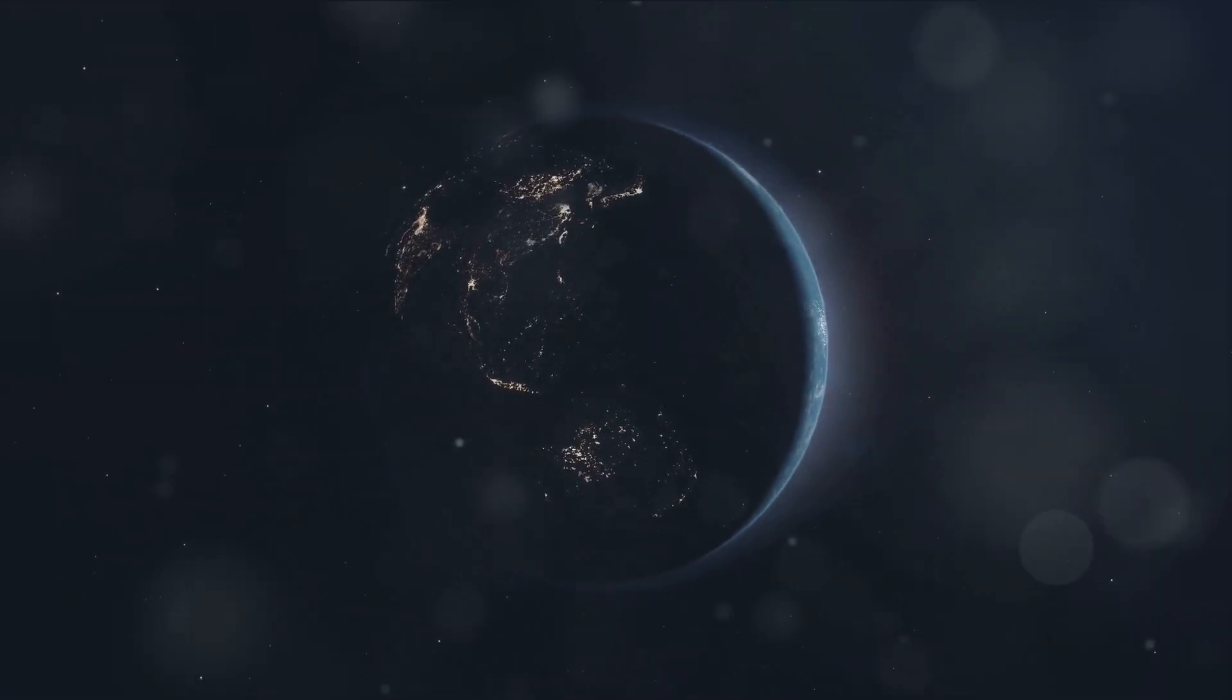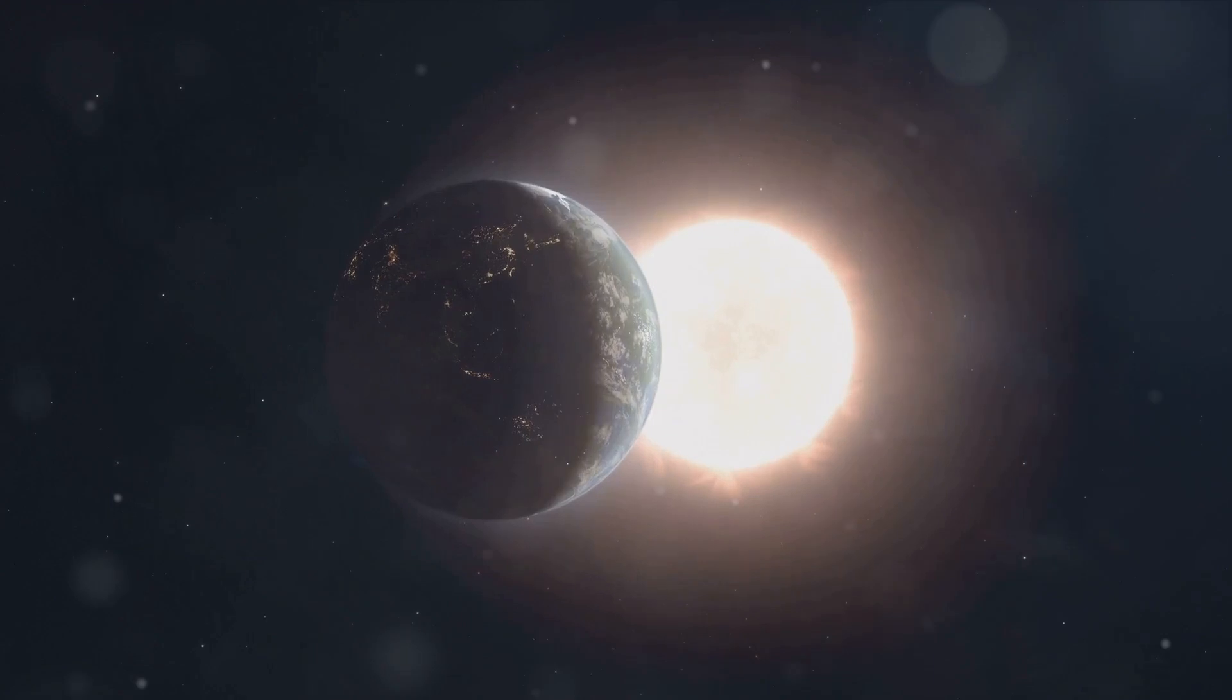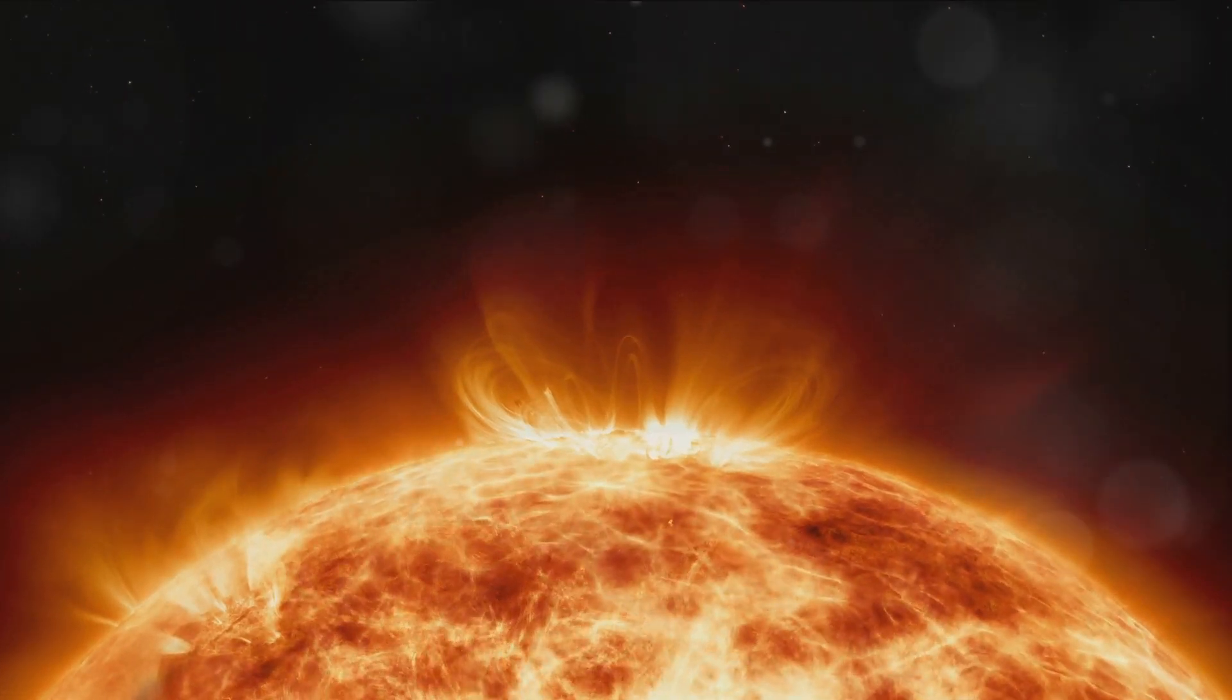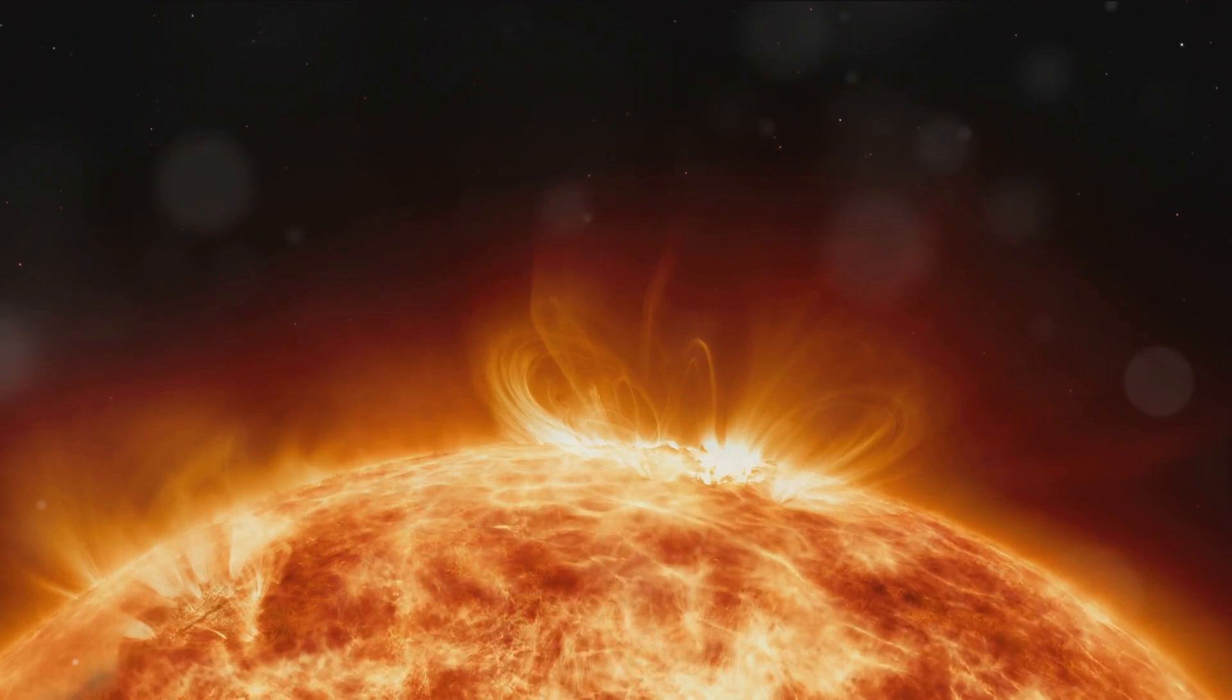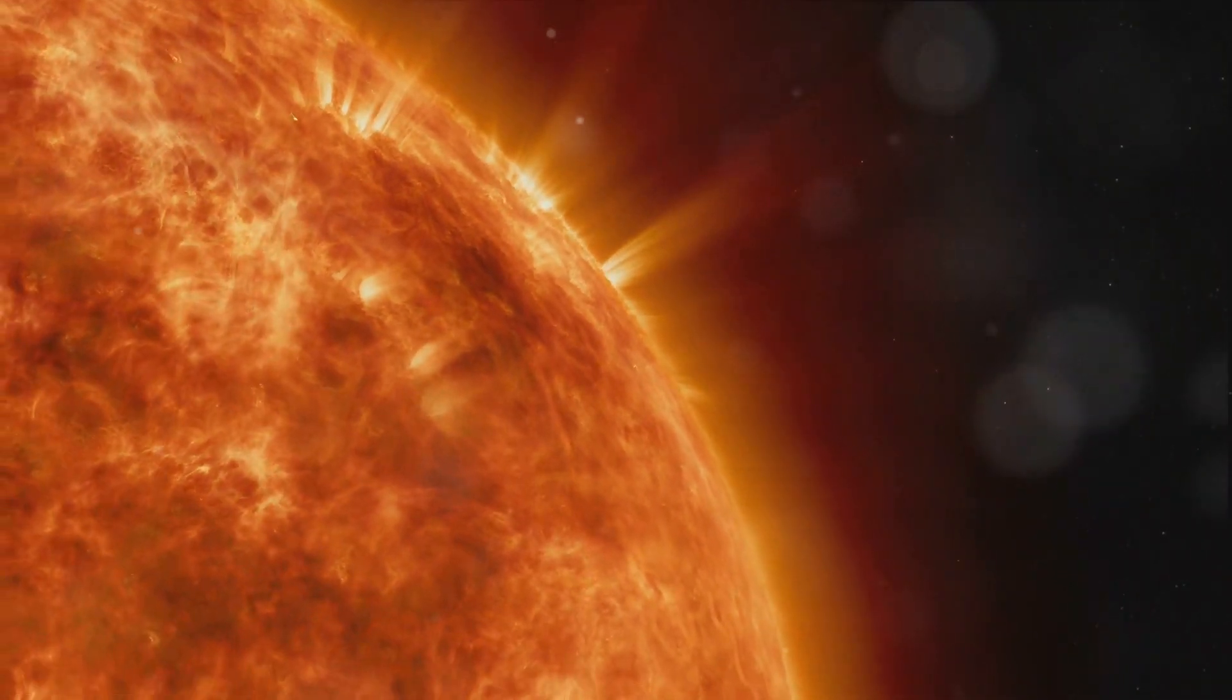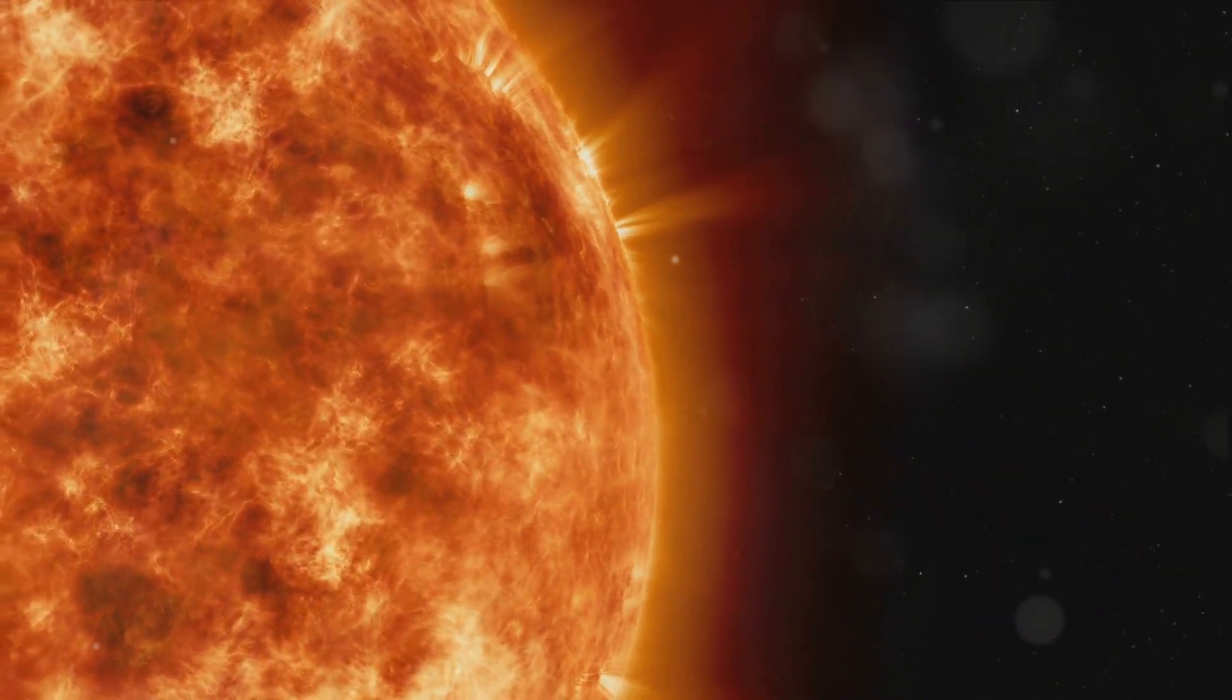It will swell up, becoming a red giant. This isn't your average growth spurt though. The sun will expand so much that it will engulf Mercury, Venus, and possibly even our home, Earth. The intense heat from the engorged sun will boil away our oceans, rendering our planet uninhabitable. It's a cataclysmic event that will spell the end of life as we know it on Earth. But it's not just our planet that will feel the burn. The entire solar system will be affected by the sun's transformation into a red giant.